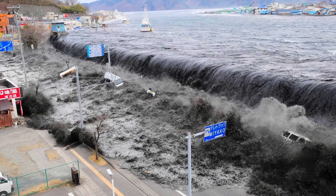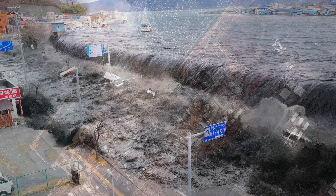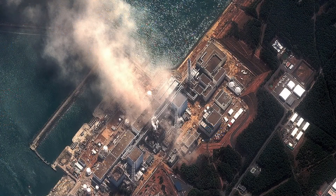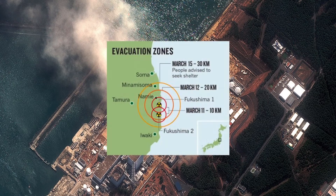When these waves reached the Fukushima Daiichi nuclear power plant in Okuma, they easily breached the protective walls surrounding the plant and led to the largest nuclear disaster since Chernobyl back in '86. In the days following the Fukushima breach, over 100,000 residents were ordered to evacuate the area.